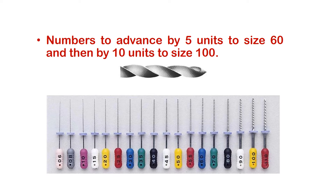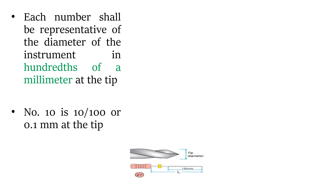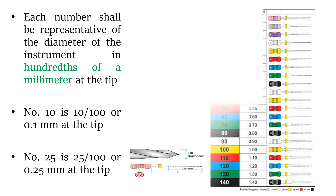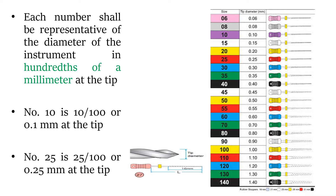Each number represents the diameter of the instrument at the tip in hundredths of a millimeter. So for a number 10 file: 10 divided by 100 equals 0.10 mm at the tip. For a number 15 file the tip diameter is 0.15 mm, for number 20 it is 0.20 mm, for 25 it is 0.25 mm, and for 30 it is 0.30 mm.